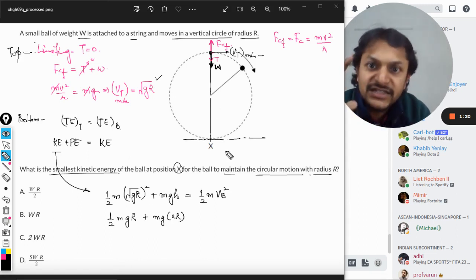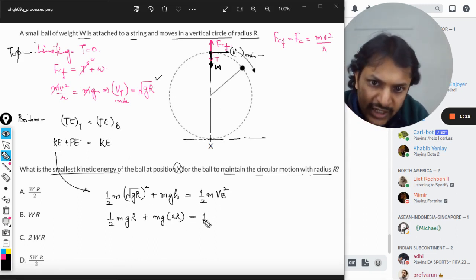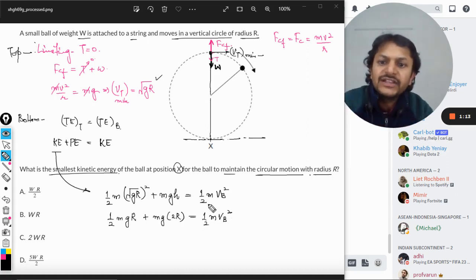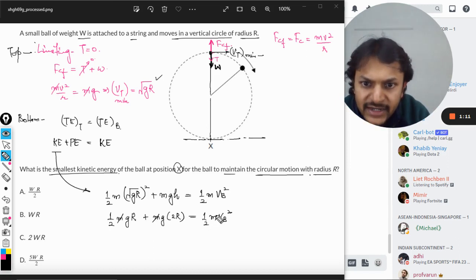So 2r is equal to half mvb square. Thereby solving this equation - cancelling this m and m and then multiplying these two here - it will give you the answer.